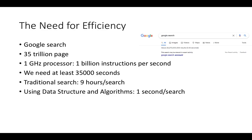If we don't have an efficient way to search, we would need at least 35,000 seconds — which means around nine hours — to do a traditional search across all the pages on the internet to find a keyword. That is very slow for a search result. But using smart data structures and efficient algorithms, Google was able to get all results in less than one second.